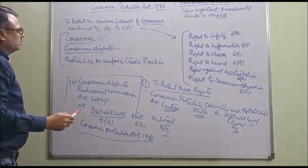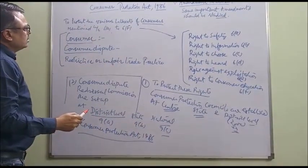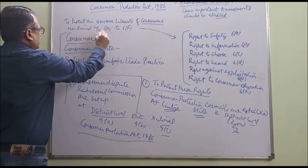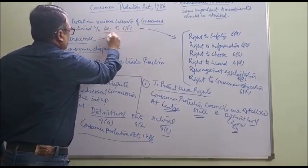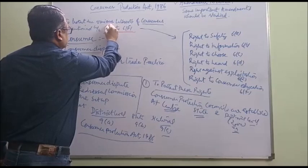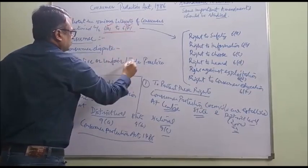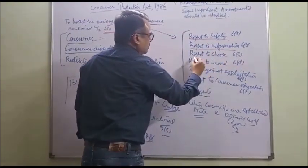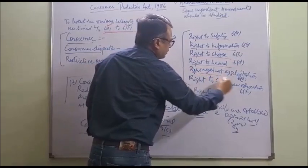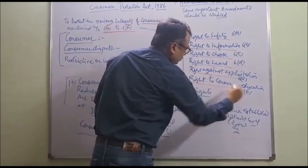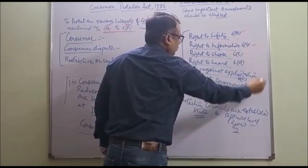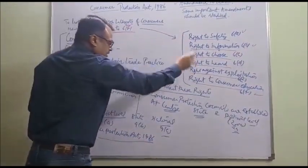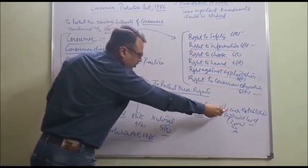As you know, the basic aim of this Act is to protect the various interests of the consumers. These rights are mentioned under Section 6a to 6f: right to safety, right to information, right to choose, right to be heard, right against exploitation, and right to consumer education under Section 6a to 6f. These are also the objectives of Consumer Protection Councils.